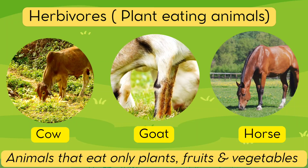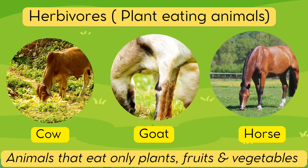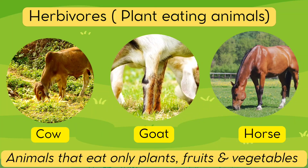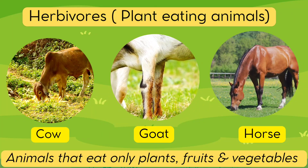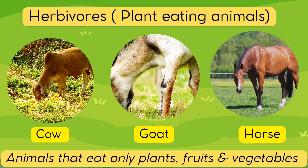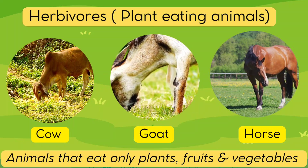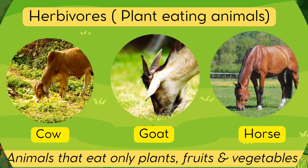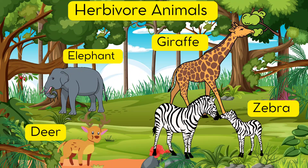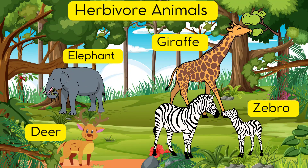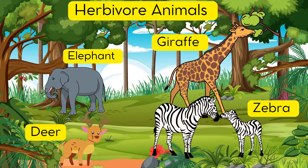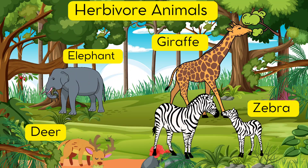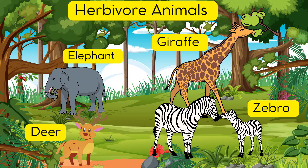Herbivores, or plant-eating animals: Animals like cow, goat and horse are herbivore animals. These animals eat only plants, fruits and vegetables. Some more examples of herbivore animals are elephant, deer, giraffe and zebra.